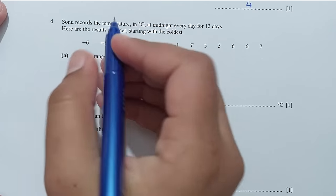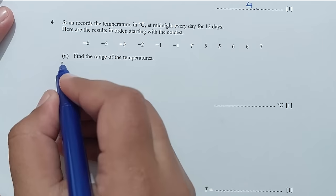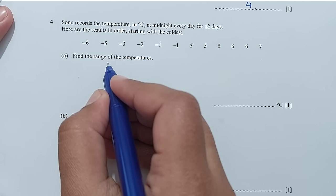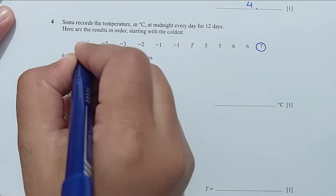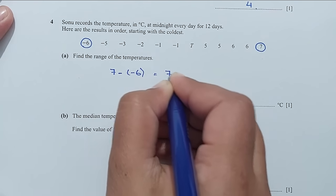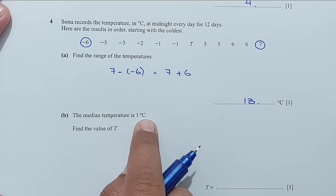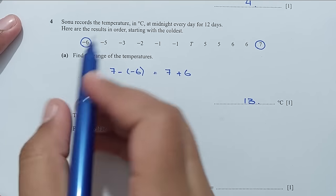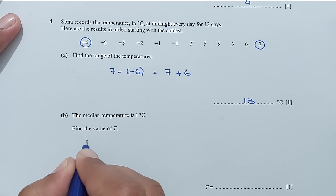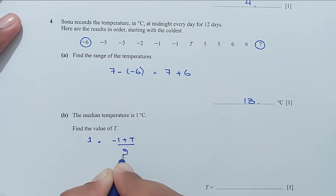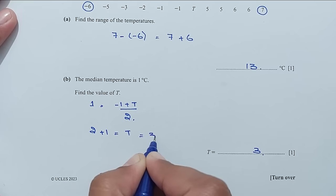Question number 4: Sonu records the temperature in degrees Celsius at midnight every day for 12 days, starting with the coldest. Part A, find the range: the higher value is 7 and the lower is negative 6, so 7 minus minus 6 equals 7 plus 6, which is 13 degrees Celsius. For part B, the median temperature is 1 degree Celsius; find the value of T. Adding the 2 middle values and dividing by 2, solving for T gives T equals 3 degrees Celsius.